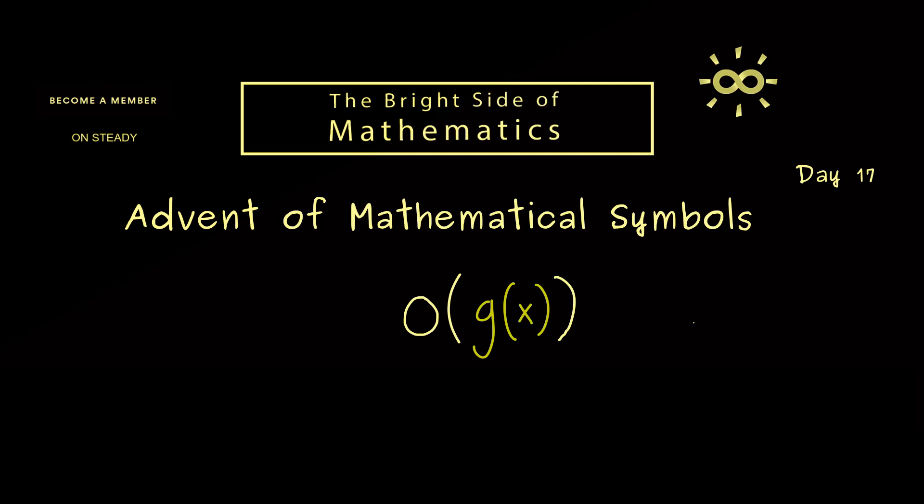However, the symbol only makes sense with respect to a limit. So we would write x goes to a number a. In fact, a could be a real number or the symbol infinity or minus infinity.